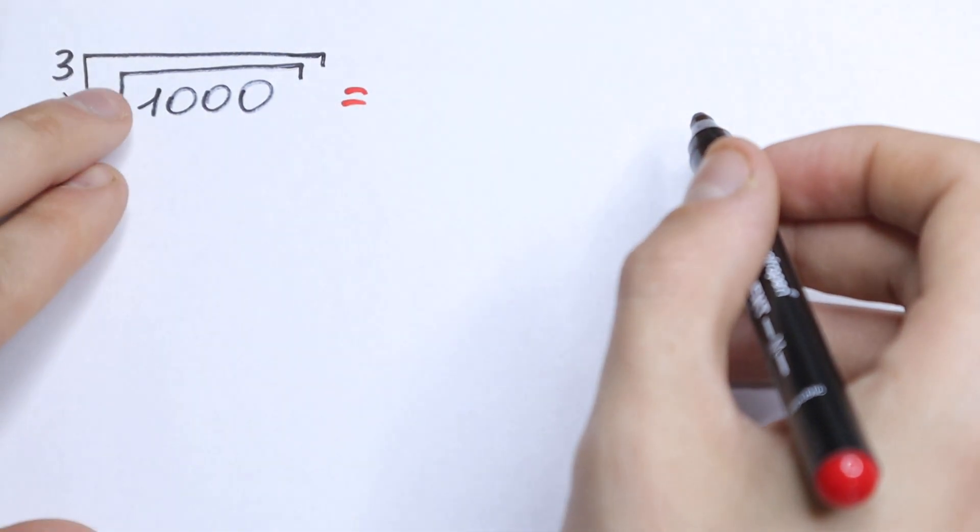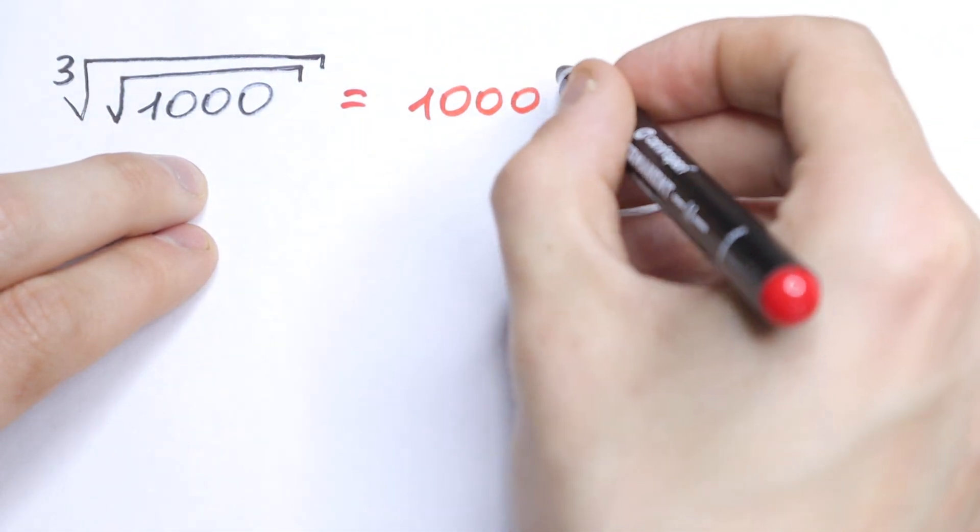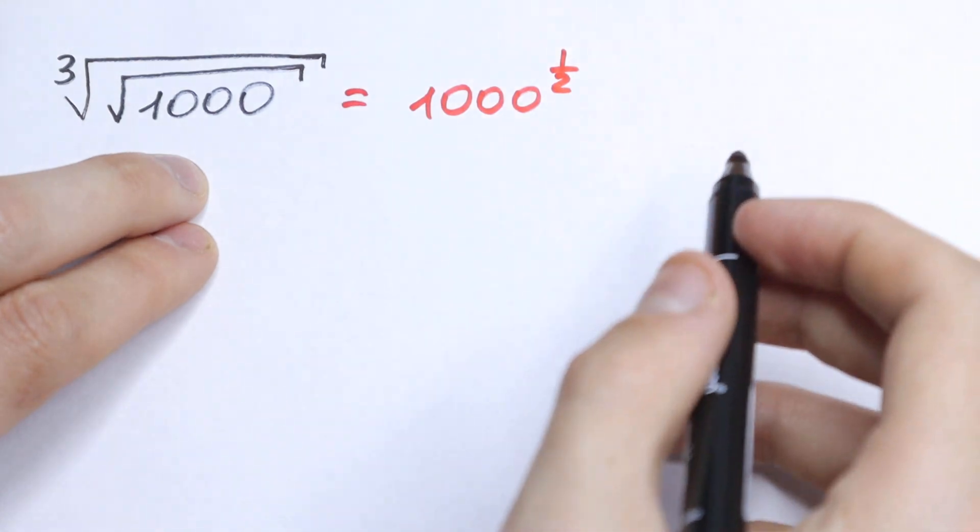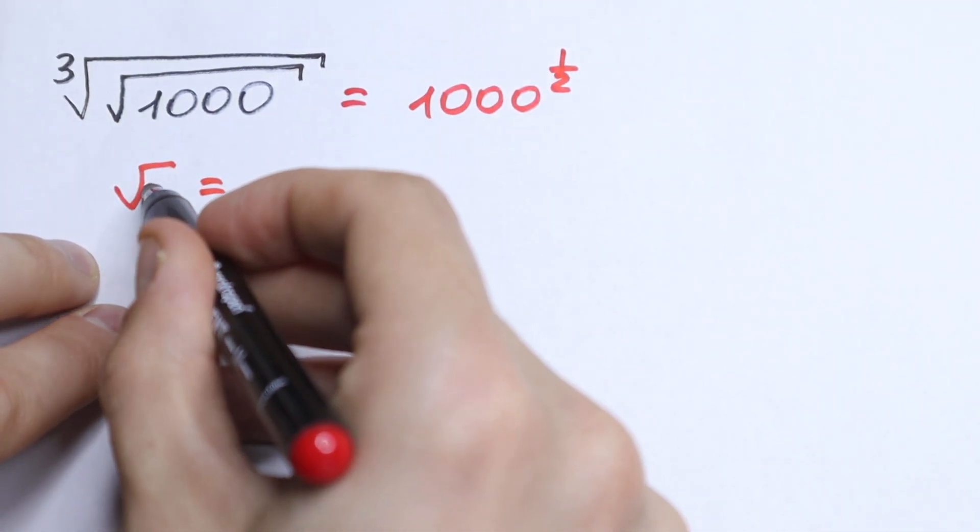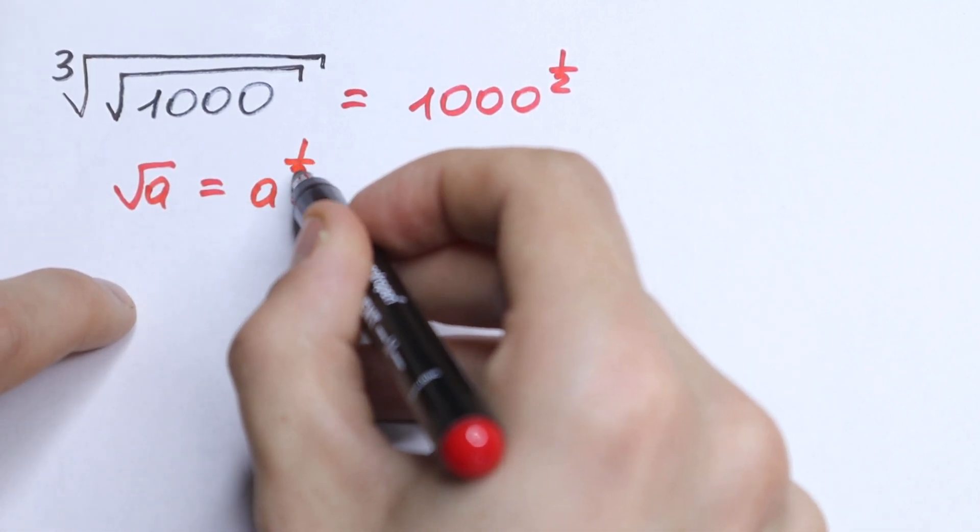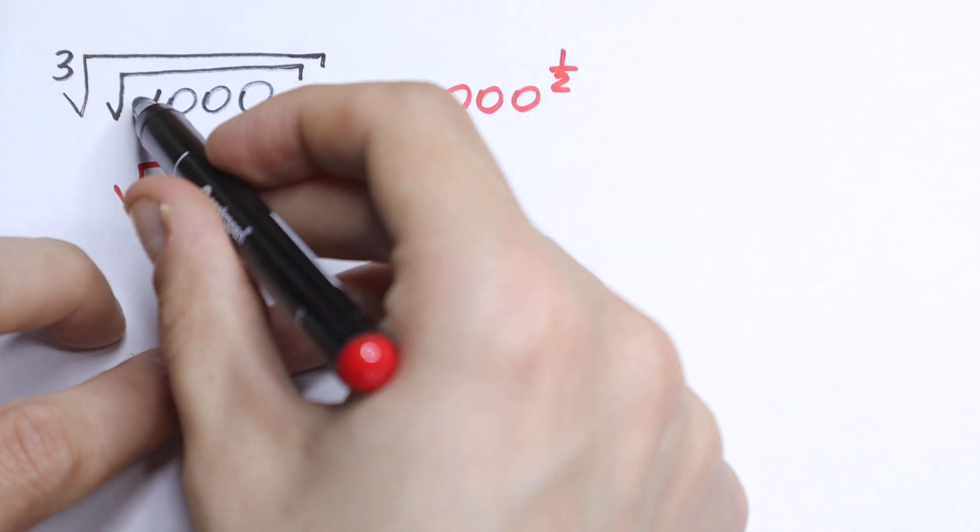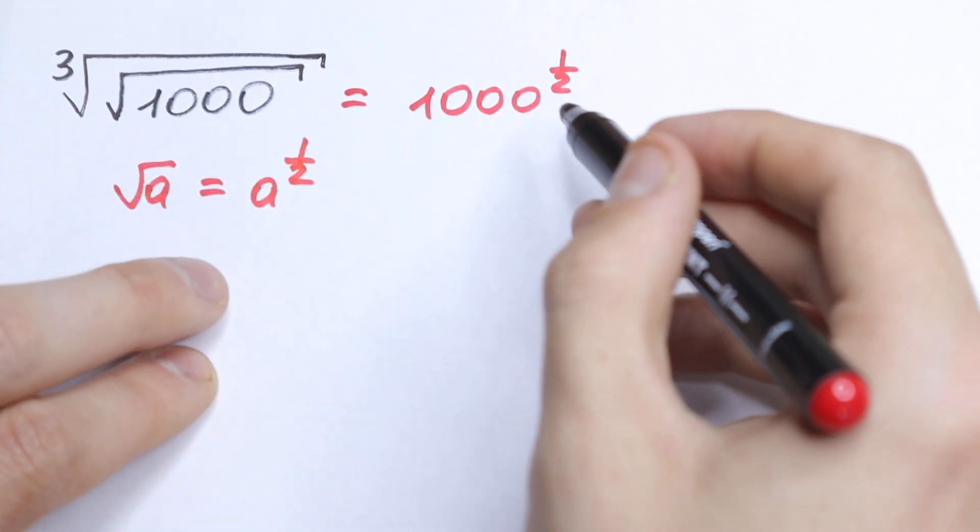We know that this square root we can rewrite as 1000 to the power 1/2. Because we can rewrite square root as a number to the power 1/2. If we have square root of a, we can write it as a to the power 1/2. So we can just rewrite this square root sign inside as 1000 to the power 1/2.